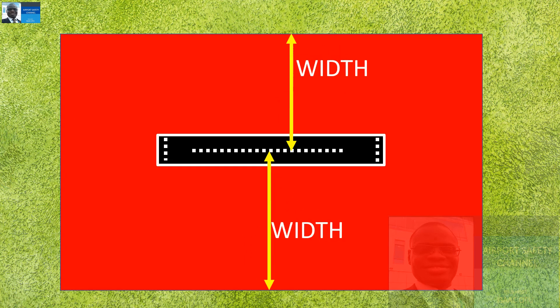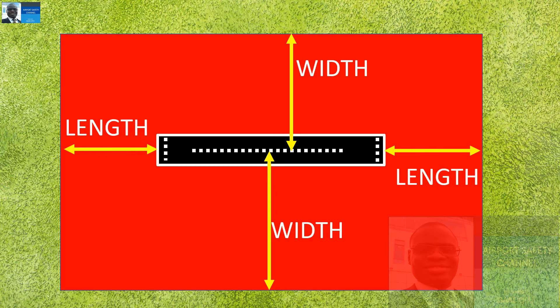The runway strip, which encompasses the runway, has a width measured from the centerline of the runway — the width on each side is measured from the centerline outwards. It also has a length, and the length of the strip is measured from the ends of the runway or before the threshold. So what is the width required and what is the length required for the strip?